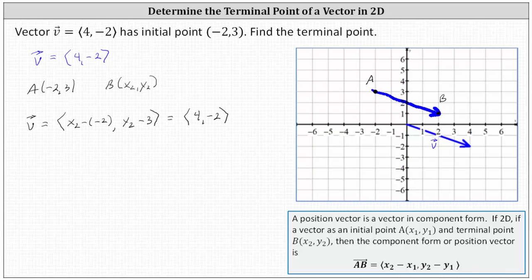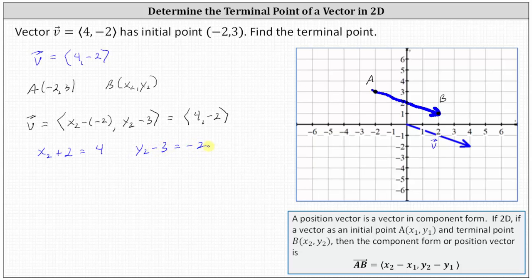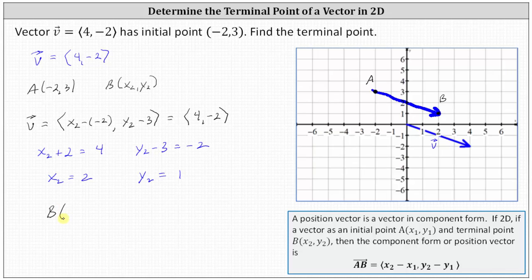From here we can conclude that x sub two minus negative two, or x sub two plus two, must equal four, and y sub two minus three must equal negative two. Solving for x sub two, we subtract two from both sides: x sub two equals two. Solving for y sub two, we add three to both sides: y sub two equals positive one. This gives us the same point B, the terminal point of vector v, as two comma one. I hope you found this helpful.